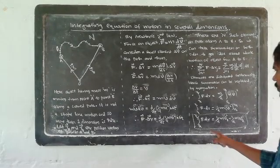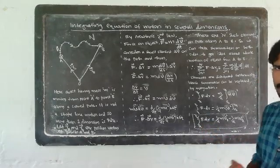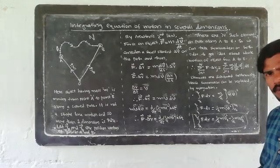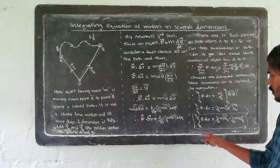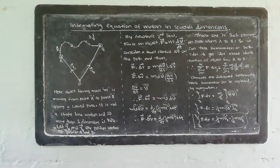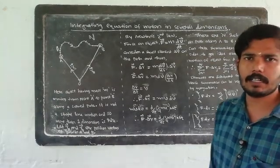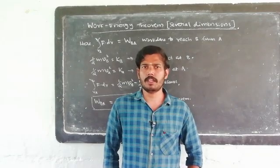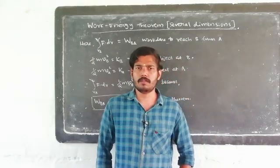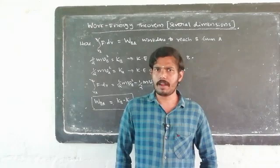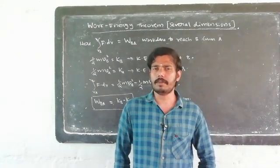We now have the equation of motion integrated in several dimensions: the integral from R_A to R_B of F·dr = ½mvB² − ½mvA². Comparing with the one-dimensional result, the right-hand side is the same. This is the integrating equation of motion in several dimensions, and from it the work-energy theorem follows.